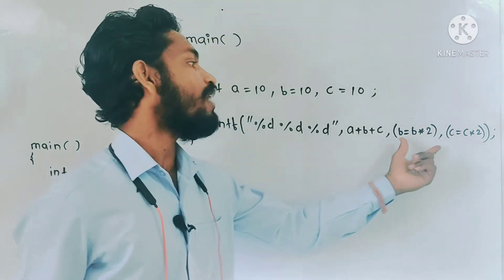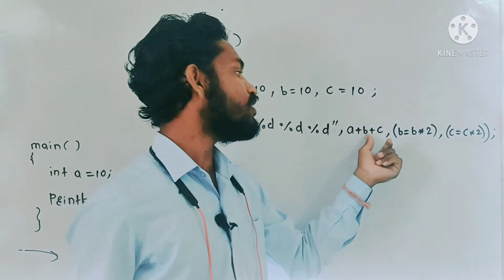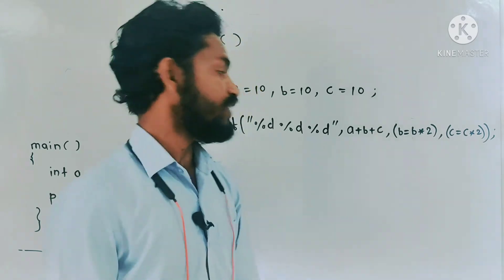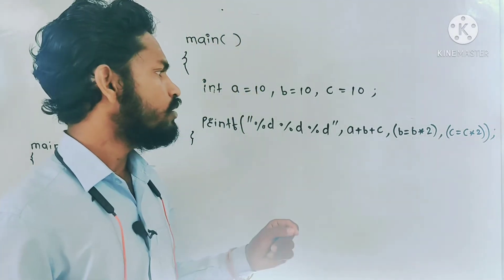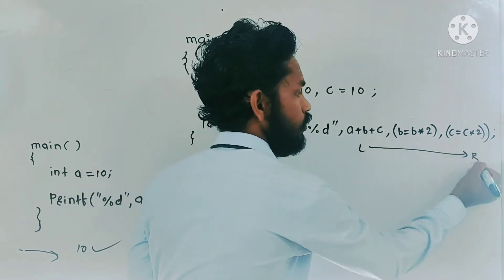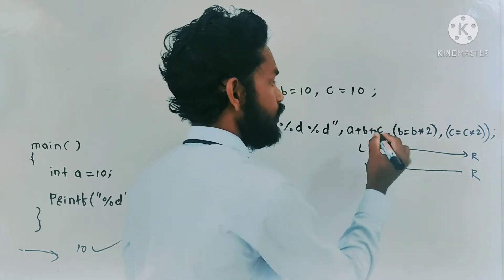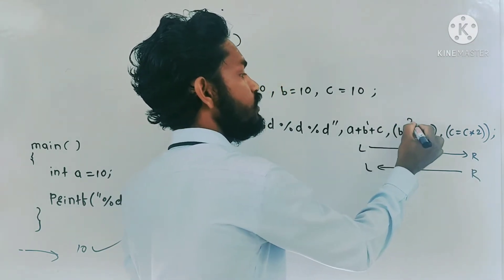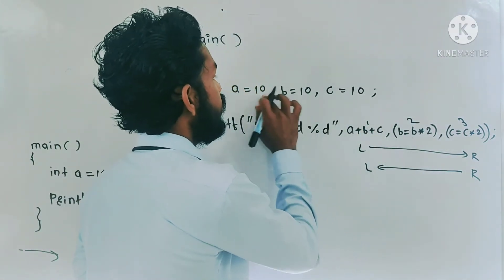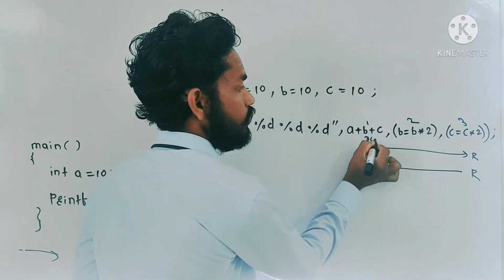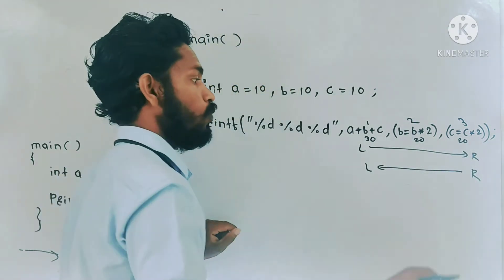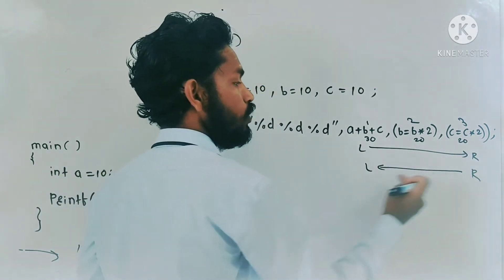When expressions are available in a printf function, printf will solve those expressions first, then start printing the data. That is the first point. The second point is: whether the printf function solves the expressions from left to right or right to left. Suppose printf solves from left to right — it would solve the first expression (a+b+c = 30), then the second (b = b*2 = 20), then the third (c = 20).